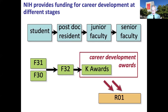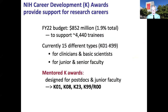The goal of all of these awards is to get you to a point where you're competitive for the gold standard research project award from NIH — the R01 — that gets you to be an independent research investigator. The current NIH budget has about $852 million, slightly less than 2% of the total NIH budget, supporting these award mechanisms and roughly 4,500 trainees. There are a wide variety of different types, all with a K number from K01 to K99, covering the spectrum of clinicians, basic scientists, junior and senior faculty.